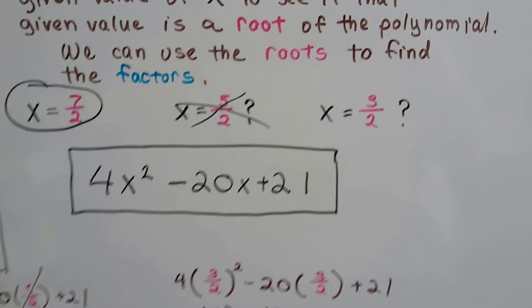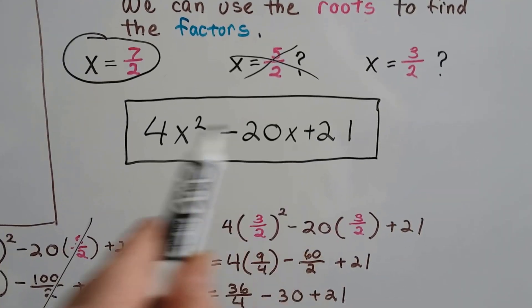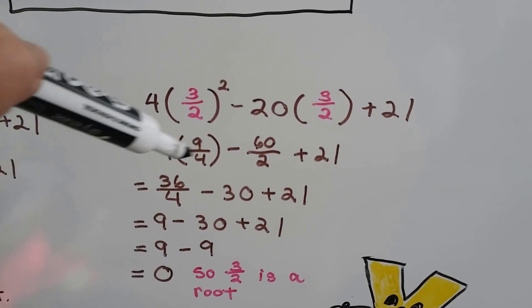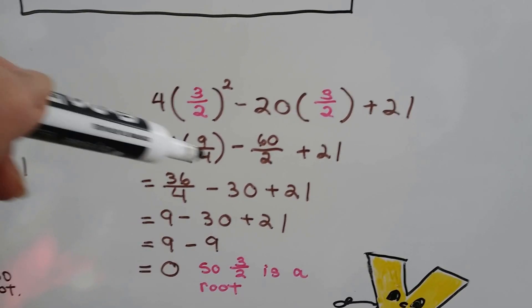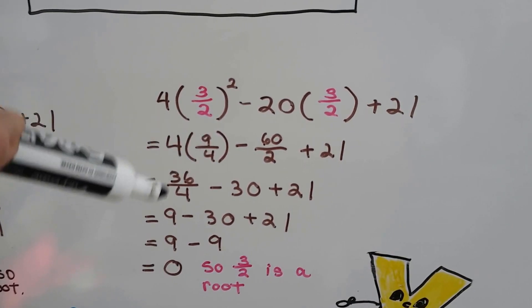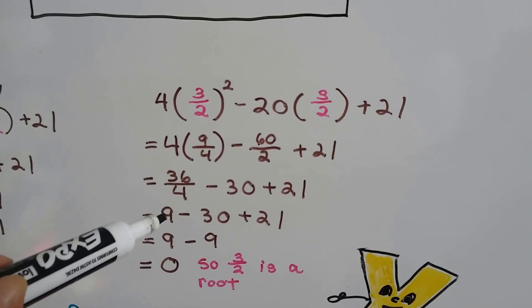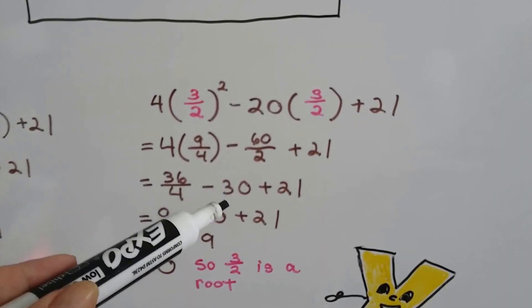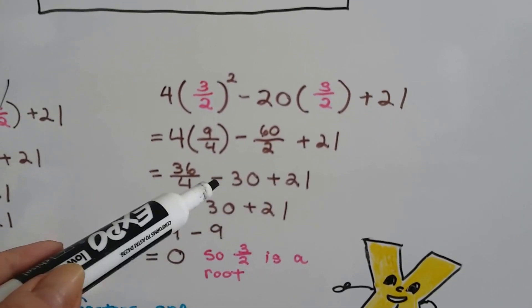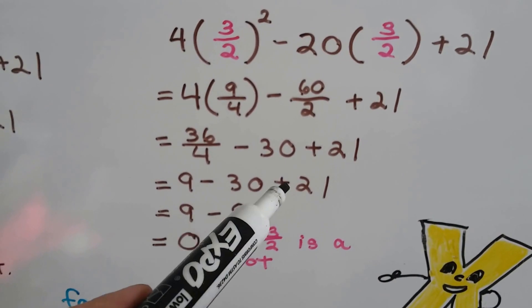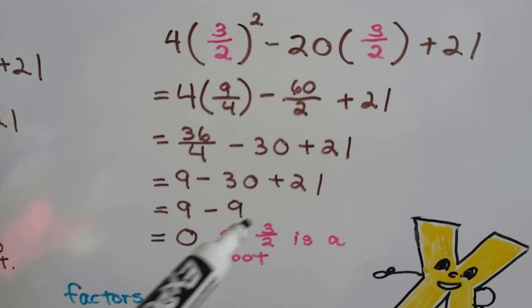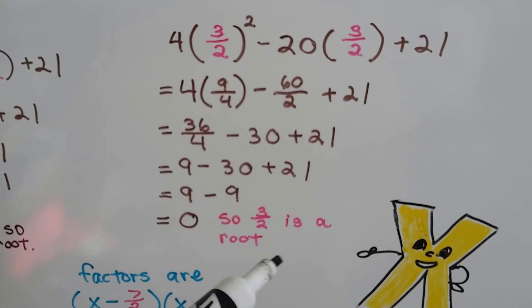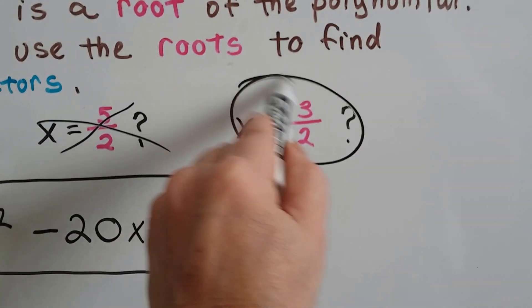Let's try 3 halves. So I'm going to plug 3 halves into this polynomial. That gives us 9 over 4. We have to do 4 times 9 over 4, which is 36 over 4. Or we could have canceled out these 4s and just made it a 9. Either way, 36 over 4 is a 9. And 20 times 3 is 60 over 2 for this one, which is 30. So we have a minus 30 plus the 21. So now we have 9 minus 30 plus 21. Well, negative 30 plus 21 is negative 9. So we have 9 minus 9. That's a 0. So 3 halves is a root. So this did work.